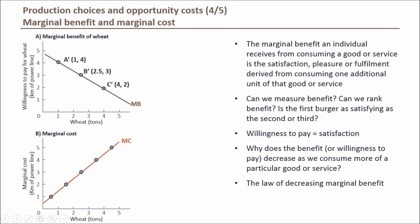If the economy still wants more wheat, it could produce a second ton of wheat. But this time the economy is not as hungry as before, so the satisfaction won't be as great as for the first ton. For the second ton of wheat, the economy is still willing to pay with some kilometres of power lines, but not as much as for the first ton. In essence, the economy values the second ton of wheat less than the first, because the overall benefit derived from consuming the second ton was lower.